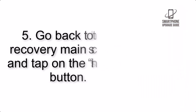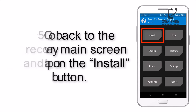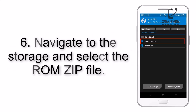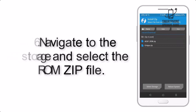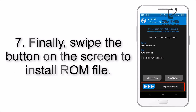Step 4: Swipe the button to wipe the device. Step 5: Go back to the recovery main screen and tap on the Install button. Step 6: Navigate to the storage and select the ROM zip file.